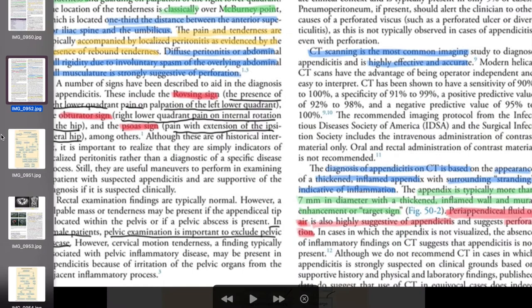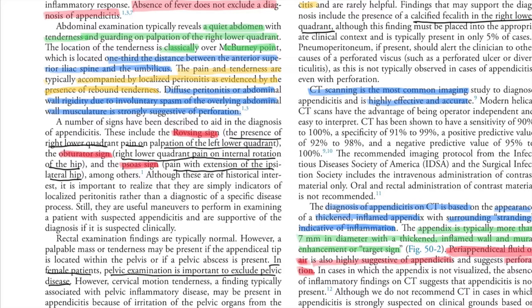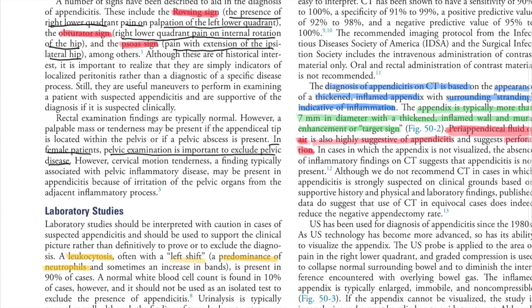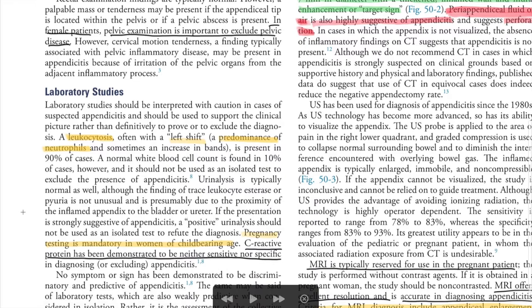Diffuse peritonitis or abdominal wall rigidity due to involuntary spasm of the overlying musculature is strongly suggestive of perforation. Three important signs aid in diagnosis: Rovsing's sign — right lower quadrant pain on palpation of the left lower quadrant; obturator sign — right lower quadrant pain on internal rotation of the hip; and psoas sign — pain with extension of the ipsilateral hip.